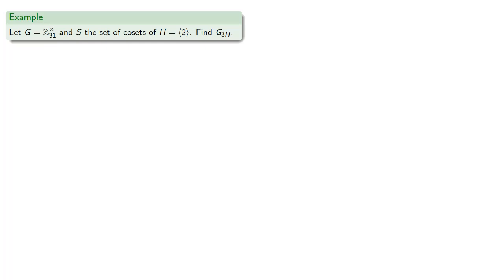And that means we want to find elements of our group where G applied to the element 3H gives us the element 3H. To begin with, we note that 3H is the set, and also because this is a coset, our cosets are either disjoint or identical.